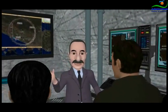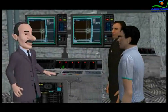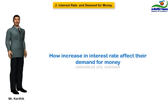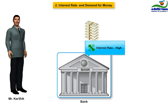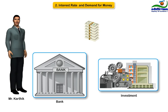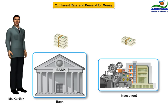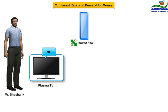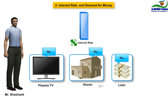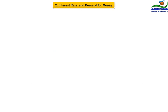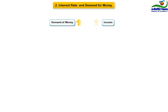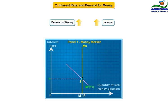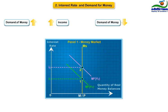We have discussed the relationship between interest rate and investments and expenditures. Let us ask Mr. Karthik and Shashank how an increase in interest rate affects their demand for money. As explained earlier, if the interest rates are high in banks, the incentive to invest in machines and buildings is less compared to keeping the same money in fixed deposits. So if the interest rates are high — no plasma TV, no house, no loan — the only thing which makes sense is fixed deposits. So the demand for money is positively related to income, i.e., aggregate output, and is responsible for shifts in the curve. And the demand for money is negatively related to interest rates and is responsible for movement along the same curve.